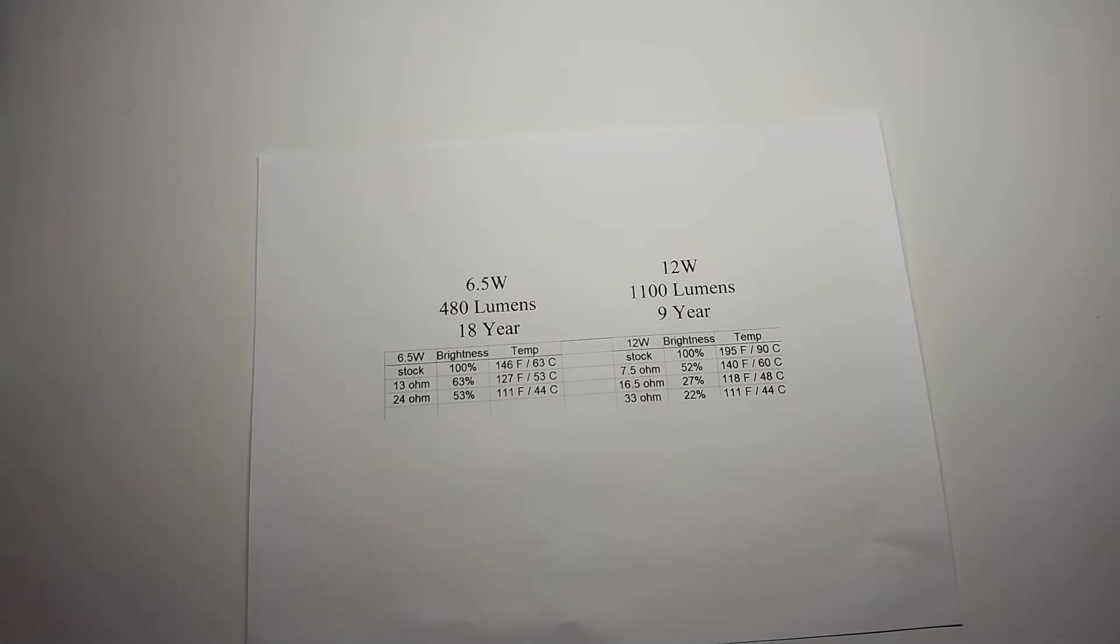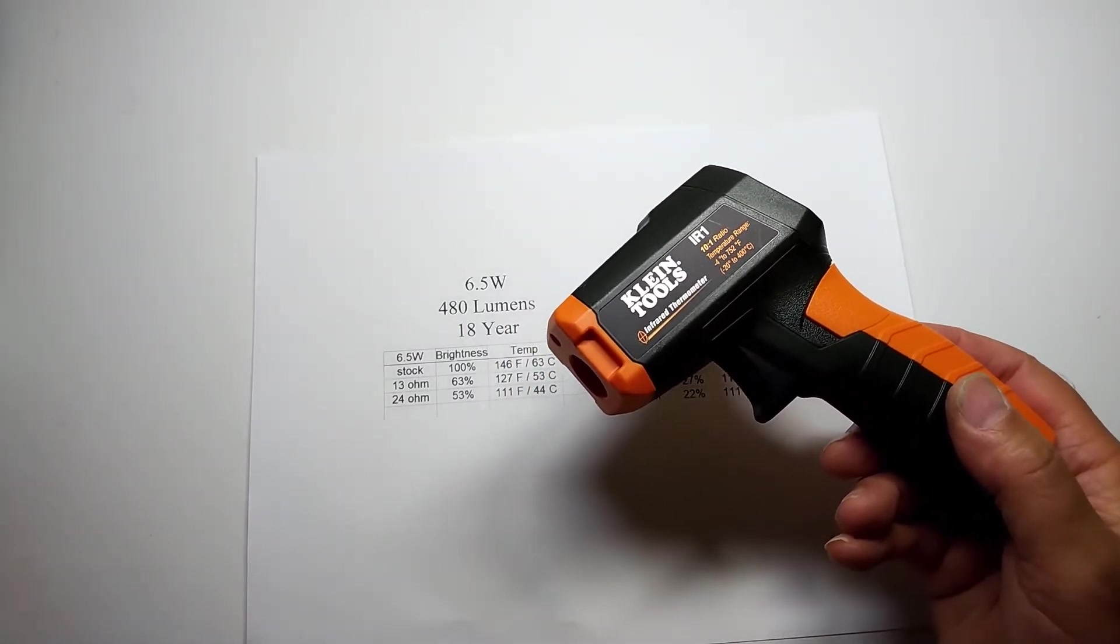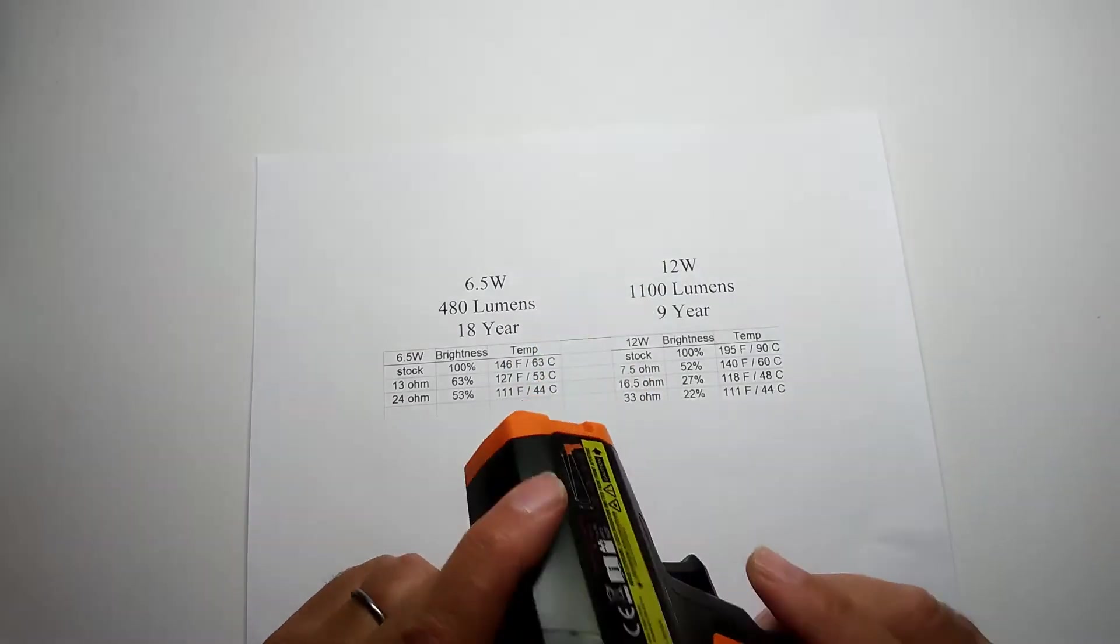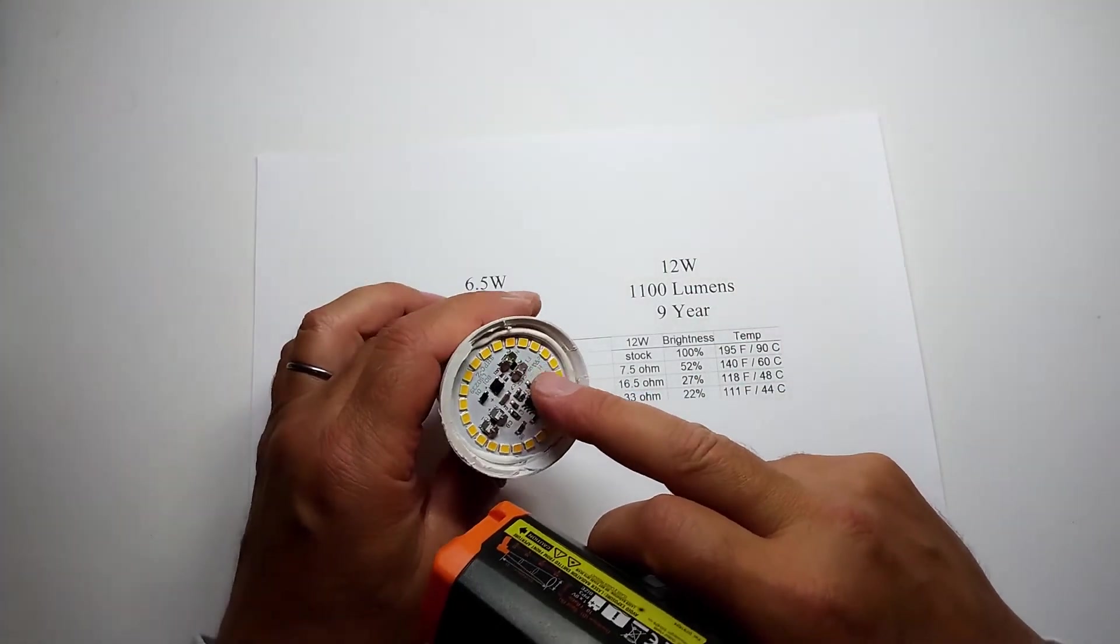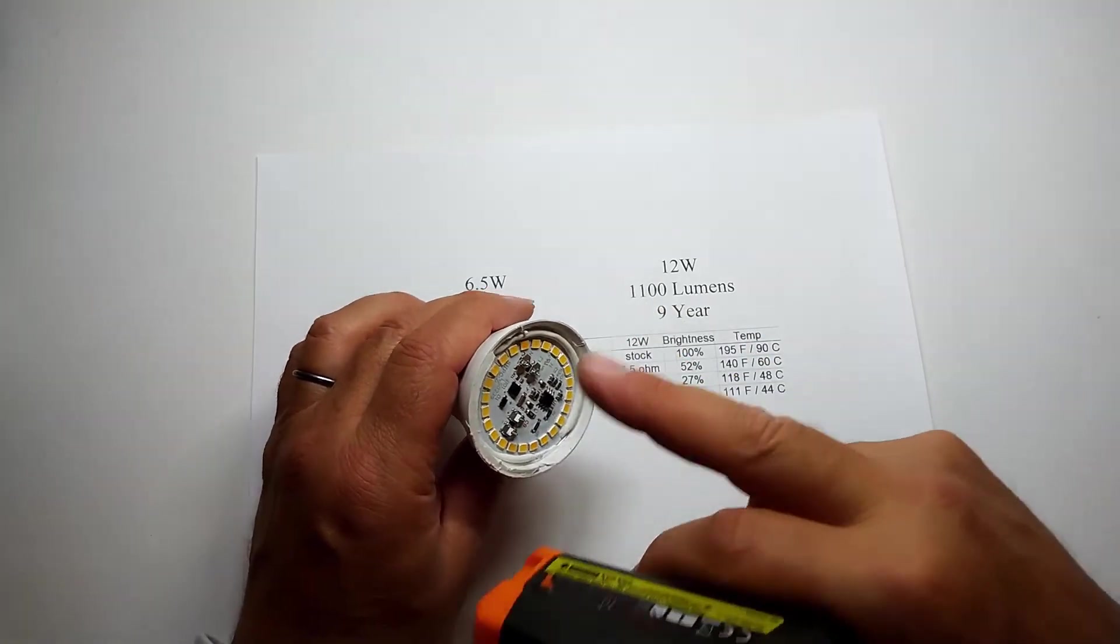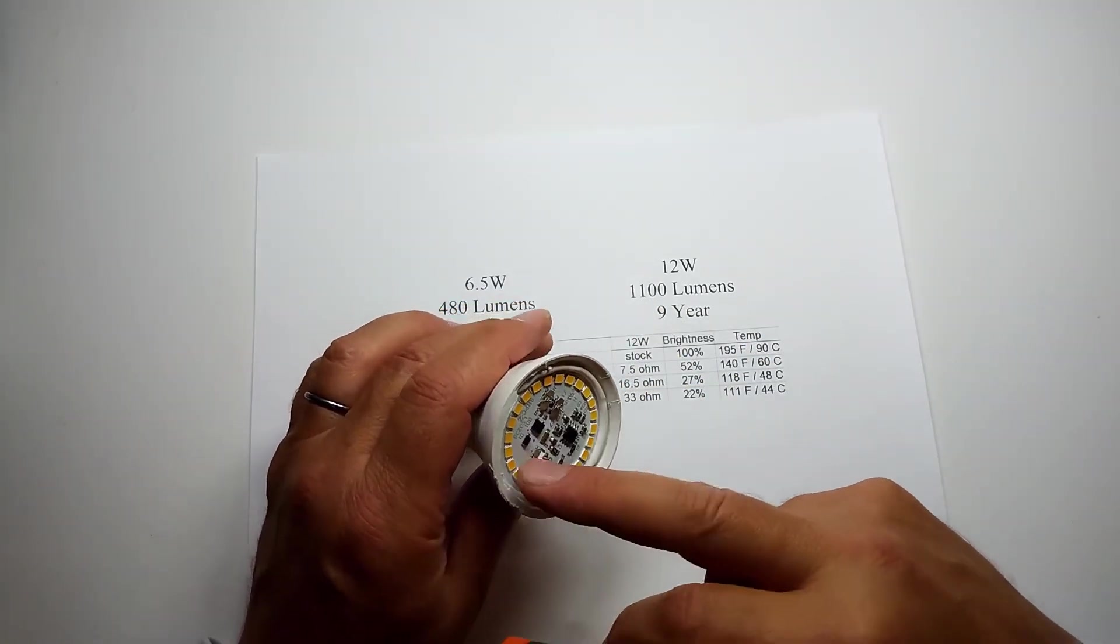The brightness was measured with an app on my phone, and then I have a temperature meter which I use to get the overall temperature of the bulb. It doesn't specifically get a temperature of any one LED on here, but it allowed me to get the temperature of the whole device. The LEDs would be significantly hotter.